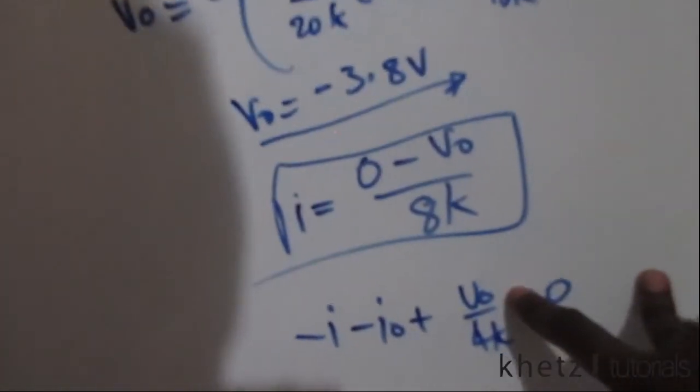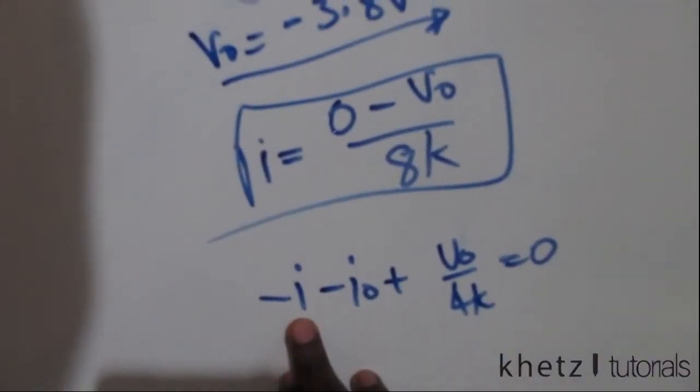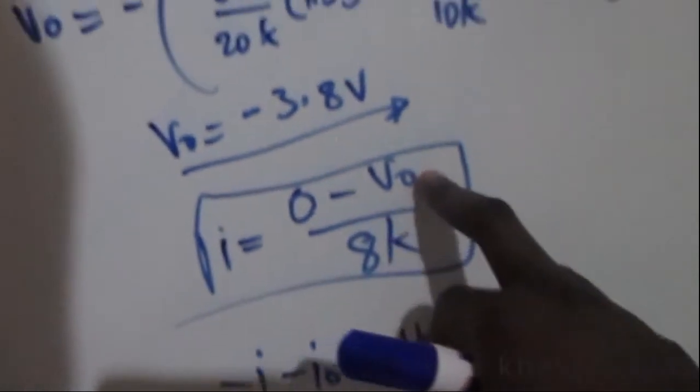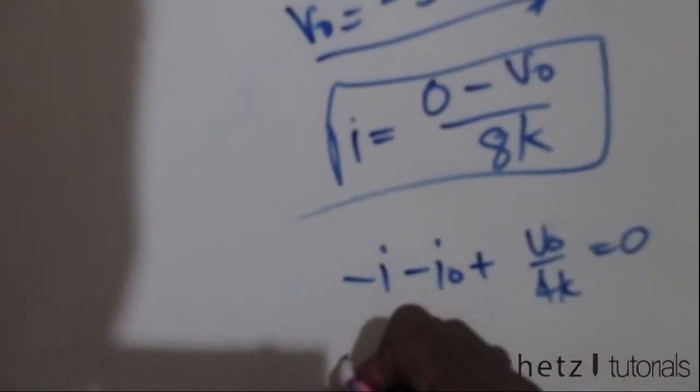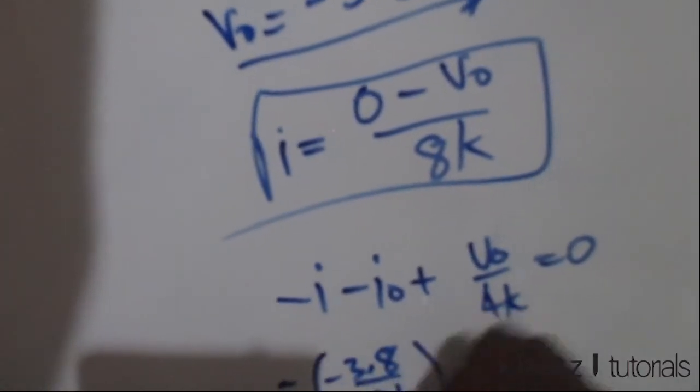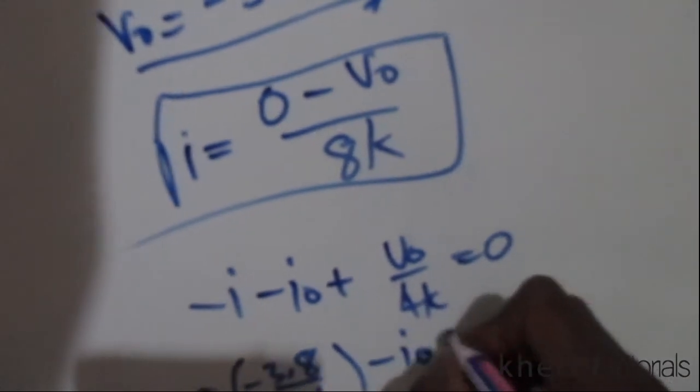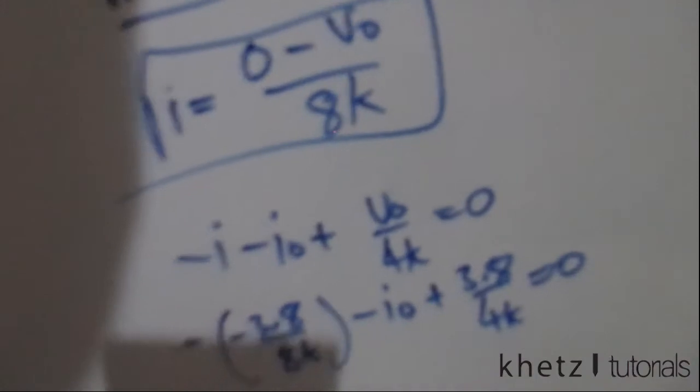Now we found the value of vo earlier, which is the first part of the question, and we can essentially find i from this because we know vo. So substituting this, we're going to say negative negative 3.8 divided by 8k, subtract io, plus 3.8 divided by 4k is equal to zero.